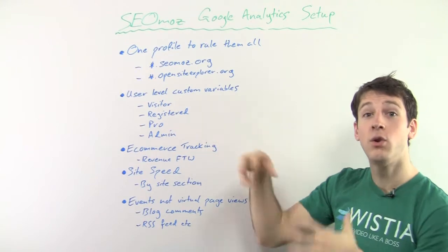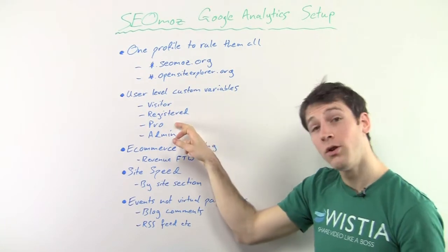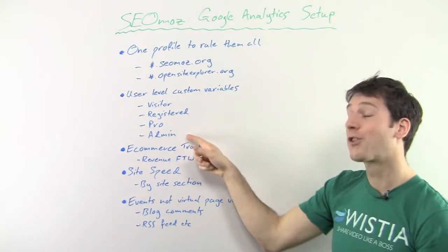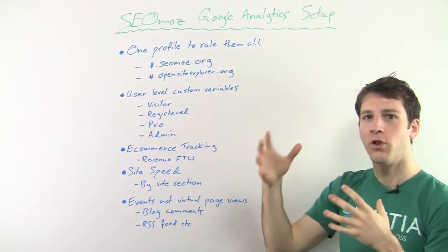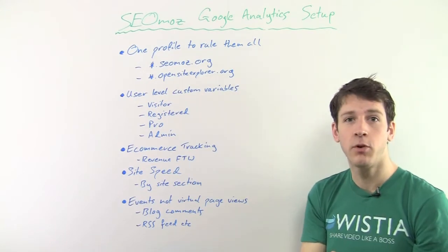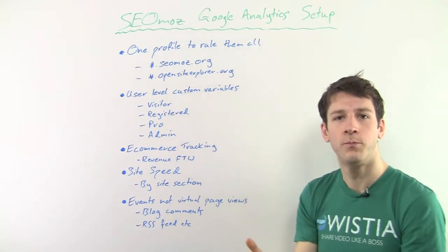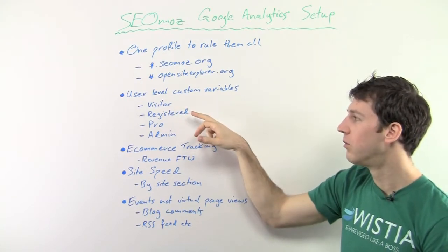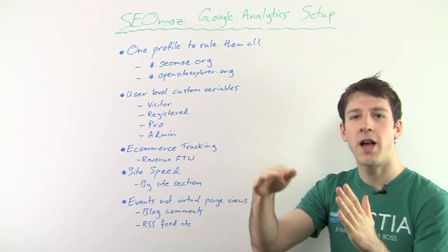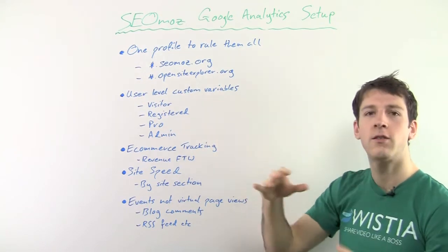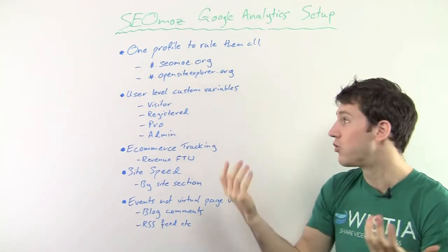These four basic states are really useful to have within Google Analytics — being able to look at how visitors, registered users, pro users, and admin users browse the website, or more importantly, excluding how admin users use the website. A particular example is some of our tools where the URL is the same whether you're logged in or logged out. But if you're logged out, you can't use the tool. So visitors viewing that URL have a very different experience to registered or pro users visiting that URL, and there's no other way of seeing that within Google Analytics. Using this data, we can start to understand how people are using the site and what experience they have when they land on our pages.